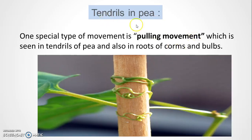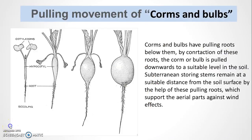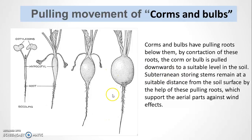For the pulling movement in corms and bulbs: corms and bulbs have pulling roots, and contraction of these roots pulls the corm and bulb downwards to a suitable level in the soil. The underground stem remains at a suitable distance from the soil surface with the help of these pulling roots, which support the aerial parts against wind effects.